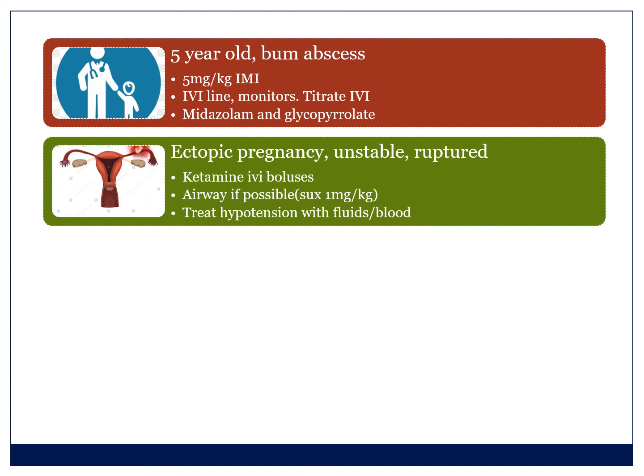If I was doing an unstable ruptured ectopic pregnancy, I would use that unstable recipe — ketamine IV boluses. Remember that for an ectopic pregnancy, intubation is still the gold standard, but if you can't do that, a laryngeal mask or i-gel. And if you can't do that, you still cannot transfer these patients out of hospital because they will die on transfer. So if you're unable to insert an airway, you could do it under ketamine alone and treat hypotension with fluids and blood — not the recommended way, but better than putting an unstable patient on an ambulance for transfer.